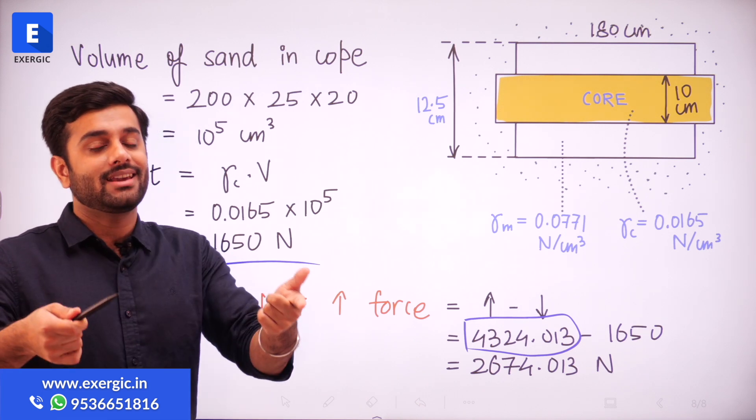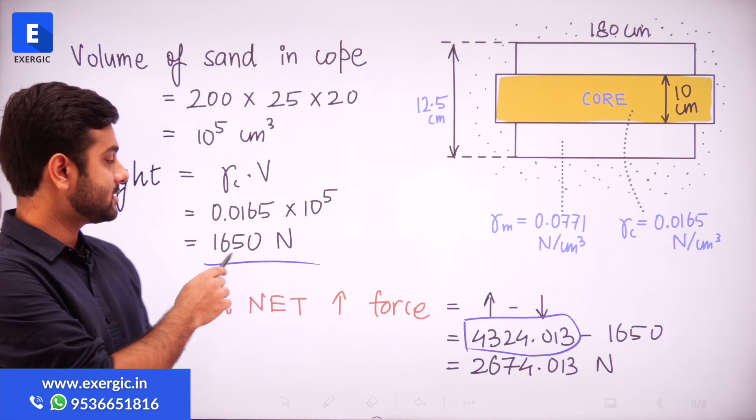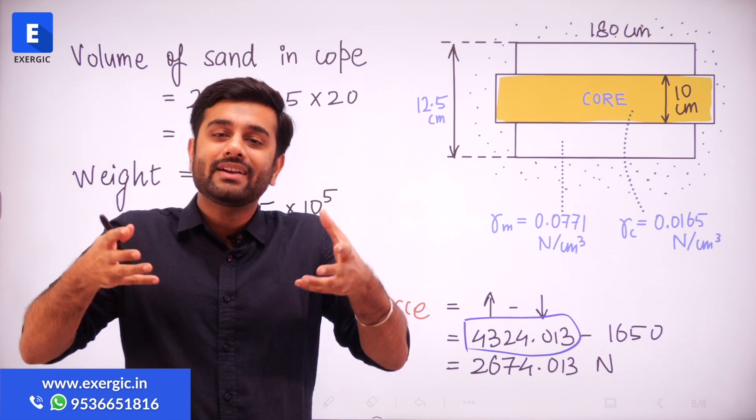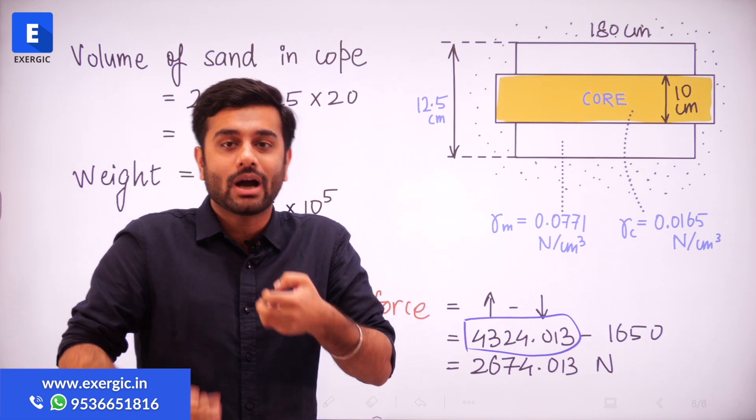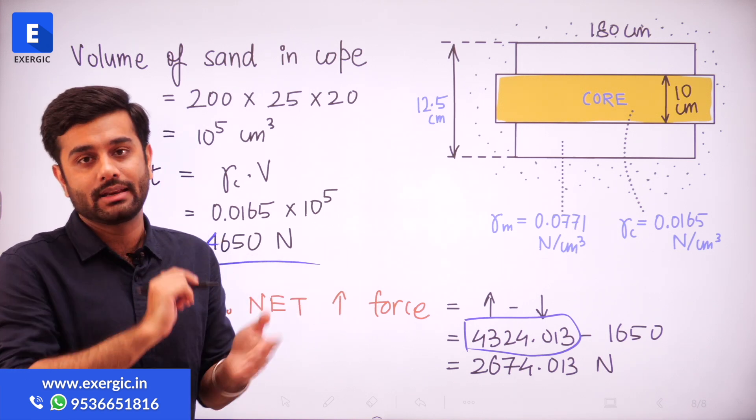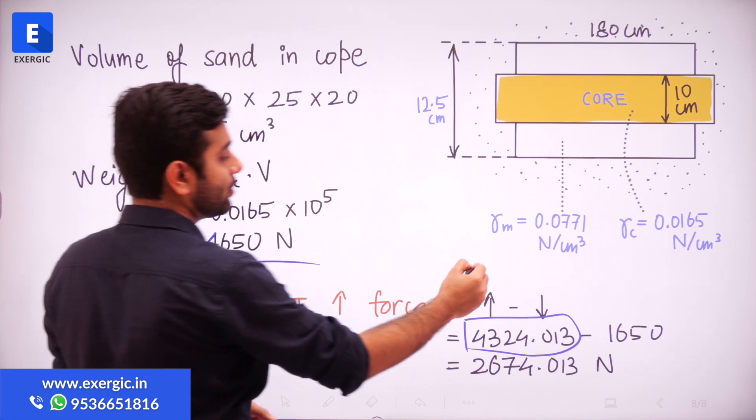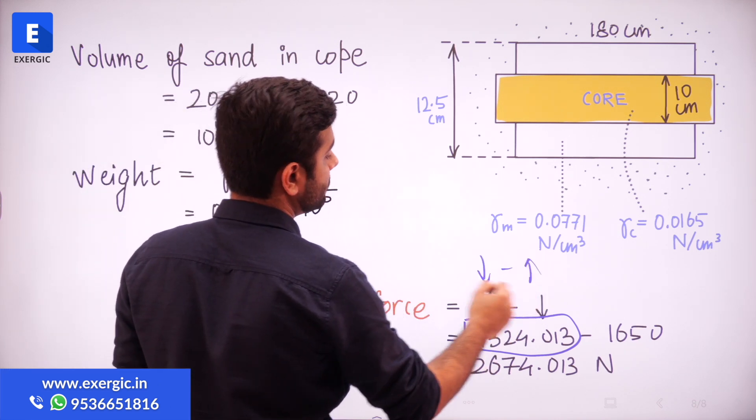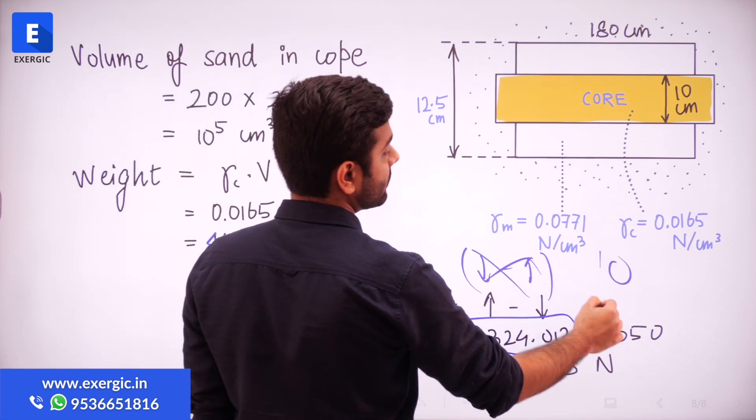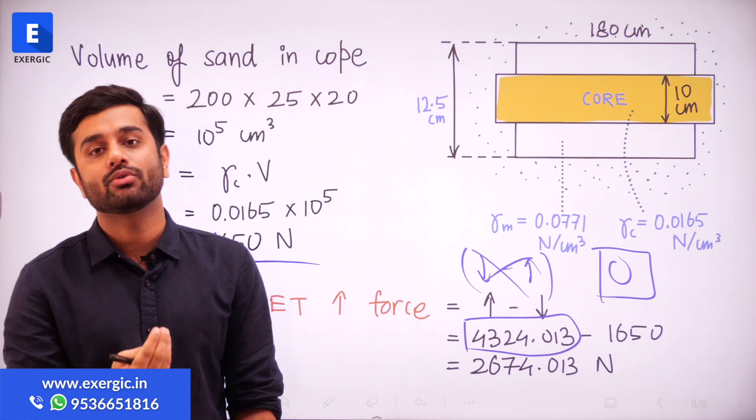But just in case you find a question where this value is higher, where suppose this comes out to be 4650, the weight of the cope, then the weight is strong enough to counteract, to balance the net upward force due to metallostatic reasons. So here, do not take the difference. Do not reverse it. Do not make it downward minus upward. Right? That will give you incorrect answer. Answer would be 0 if the weight of the cope is more than the net upward metallostatic forces.